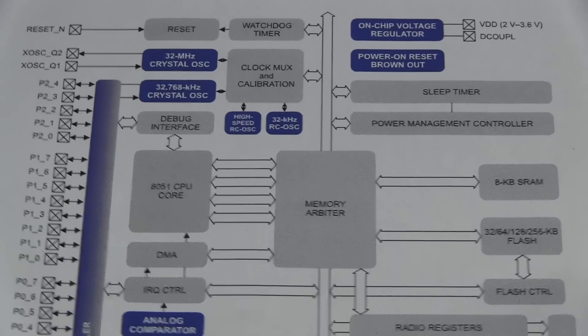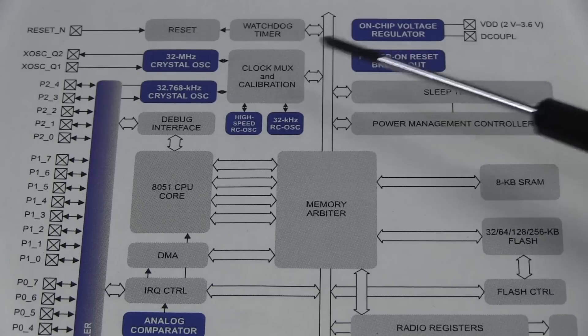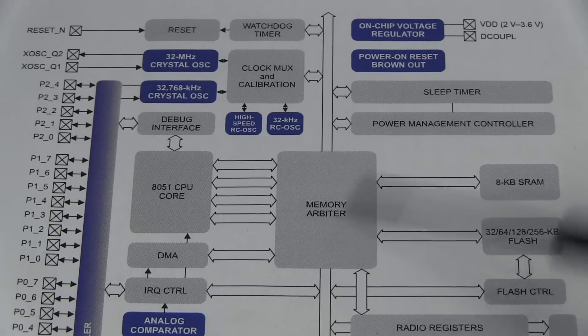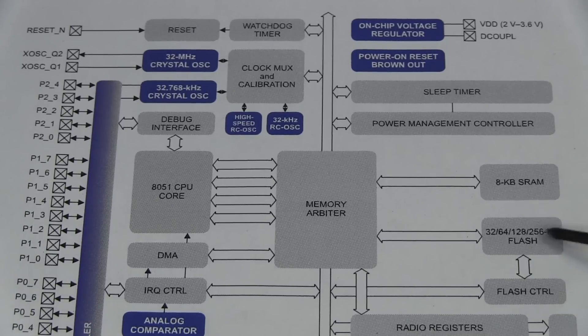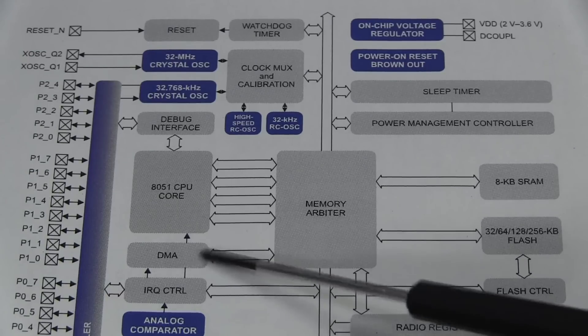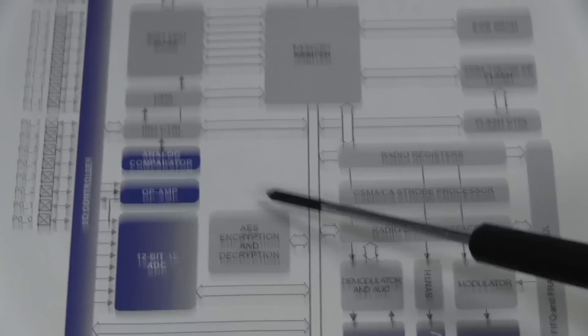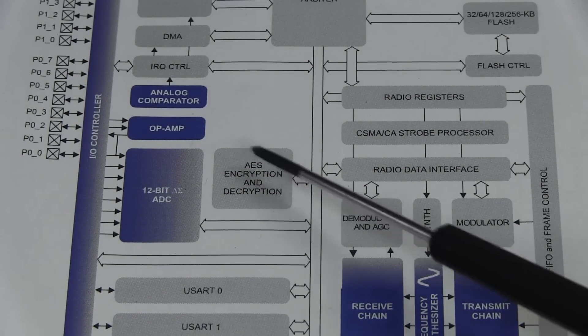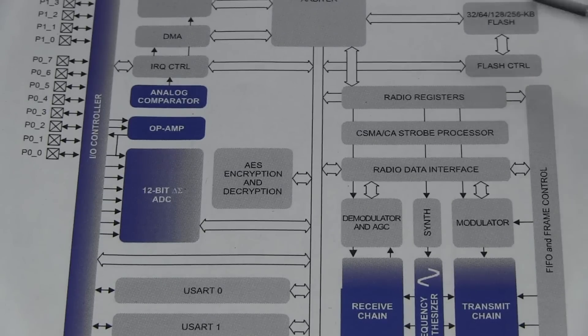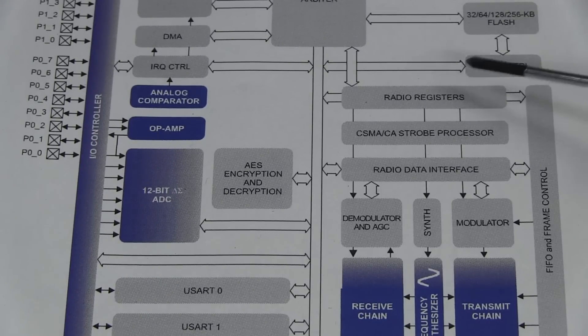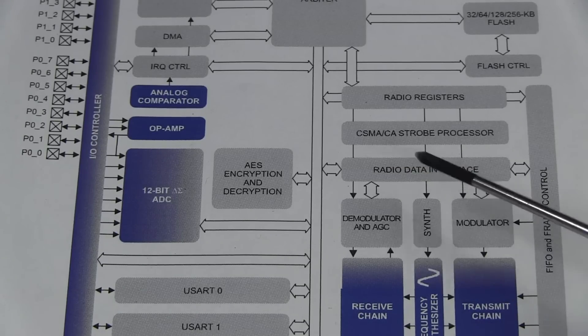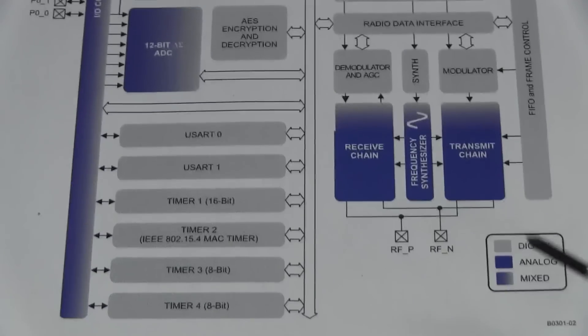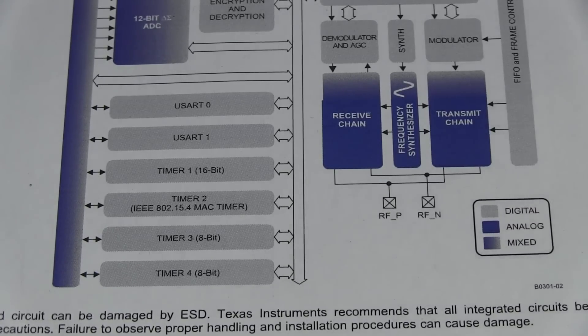And here's the block diagram for this thing. As you can see, it's got pretty much everything but the kitchen sink. We've got reset, watchdog timer, two oscillators, mux and calibration, on-chip voltage regulator, brownout, we've got sleep timers, power management, a memory arbitrator, an 8051 CPU core, 8 kilobytes of SRAM, this one has 128K of flash, and we've got interrupt control, there's a fairly powerful DMA in there, there's an analog comparator, there's an op-amp, there's a 12-bit Delta Sigma ADC, it's got AES encryption and decryption. I don't think this thing uses the encryption at all. I think it is sent as plain text, so you should be able to read it. If you can intercept it, you can probably read the data. It's got the radio registers, CSMA, all that sort of stuff, radio interface, demodulator, ADC, receive chain, the frequency synthesizer, the transmit, the modulator. It's all there, FIFO and all the frame control to handle all that, plus a couple of UARTs thrown in, a couple of four timers in there, and Bob's your uncle.